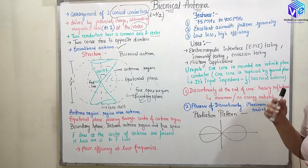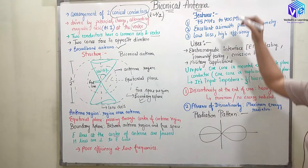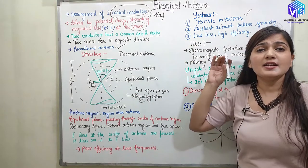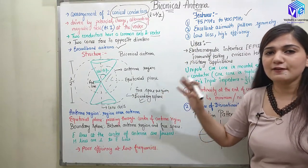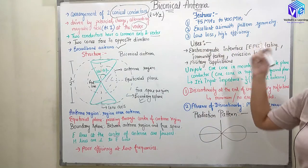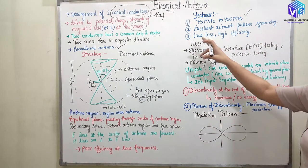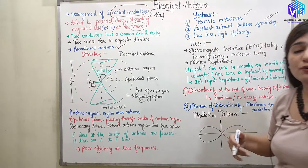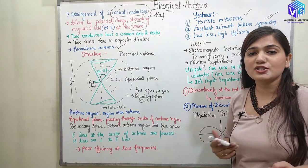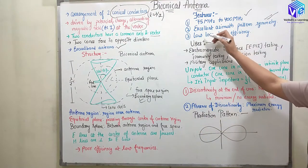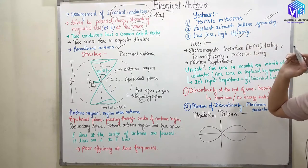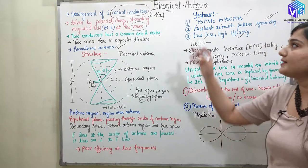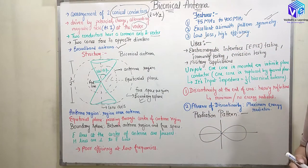Let's understand some more features of the biconical antenna. It is working from 75 MHz to 400 MHz — you can see its broadband nature, working very efficiently over a very large frequency range. It has excellent azimuthal pattern symmetry, so it can be used in a wide range of applications due to its symmetrical pattern structure. It has low loss and high efficiency when used in the higher frequency range.